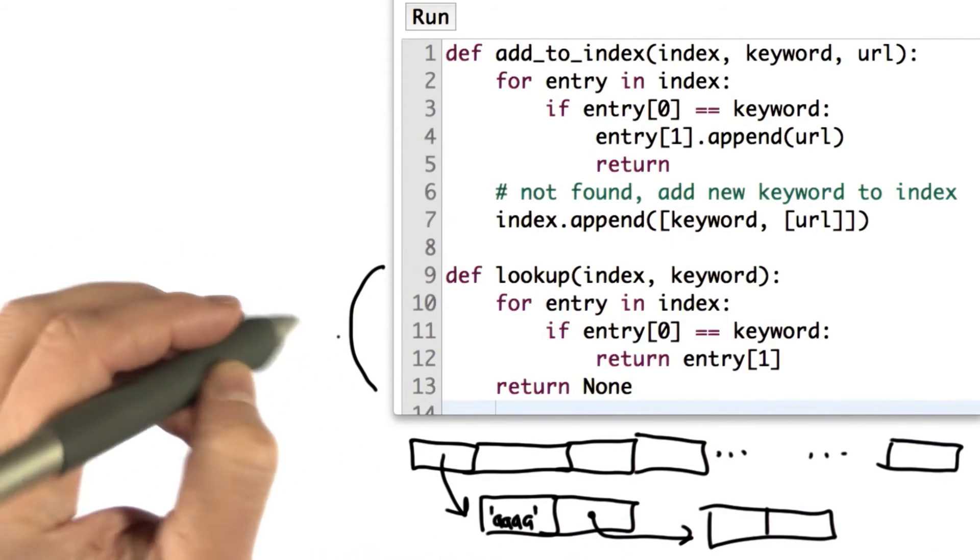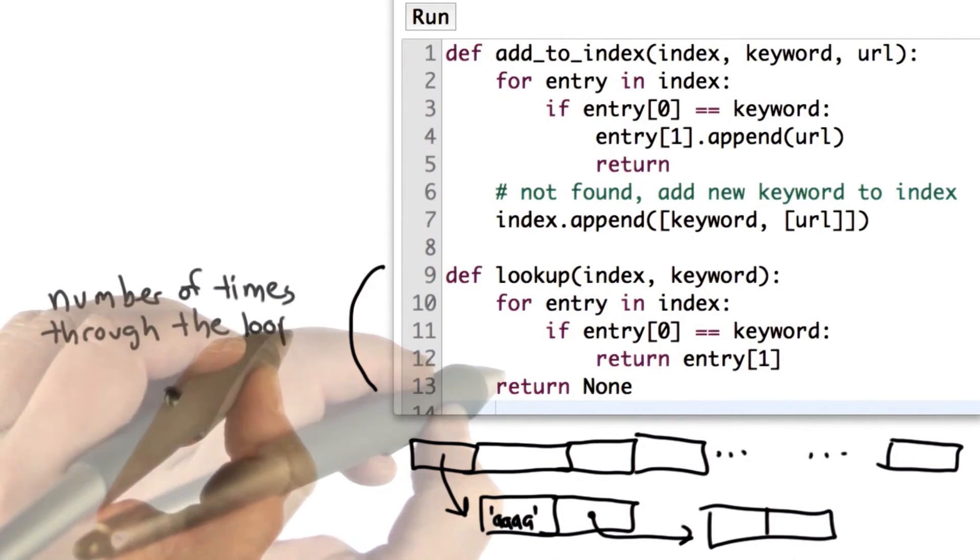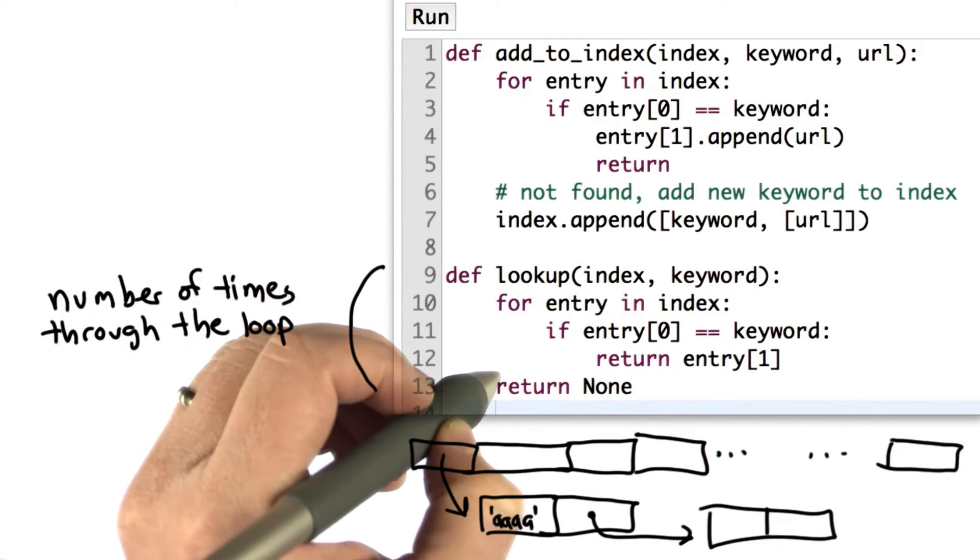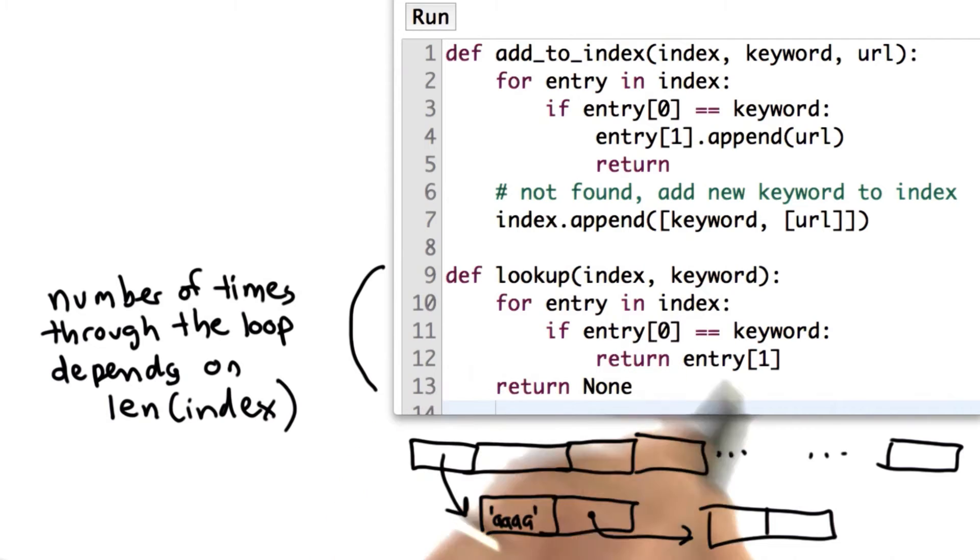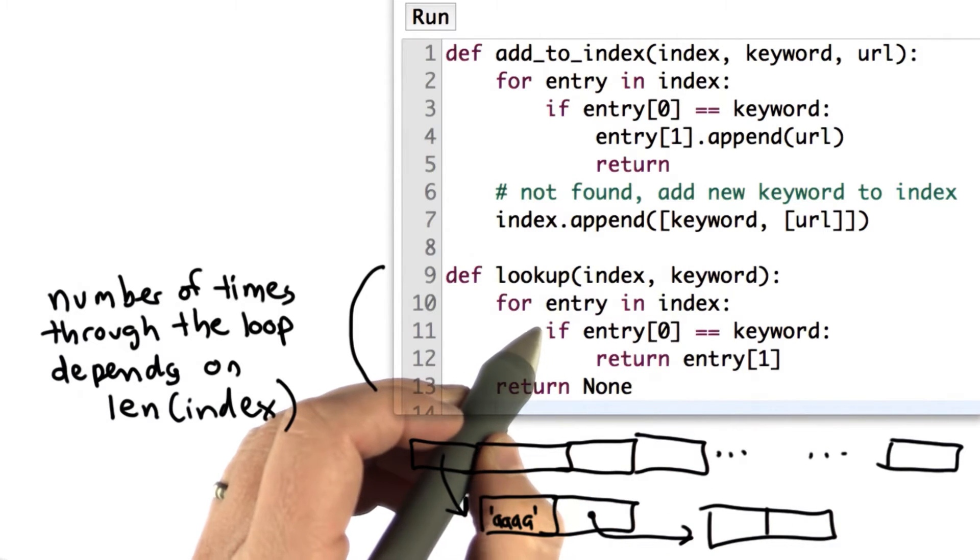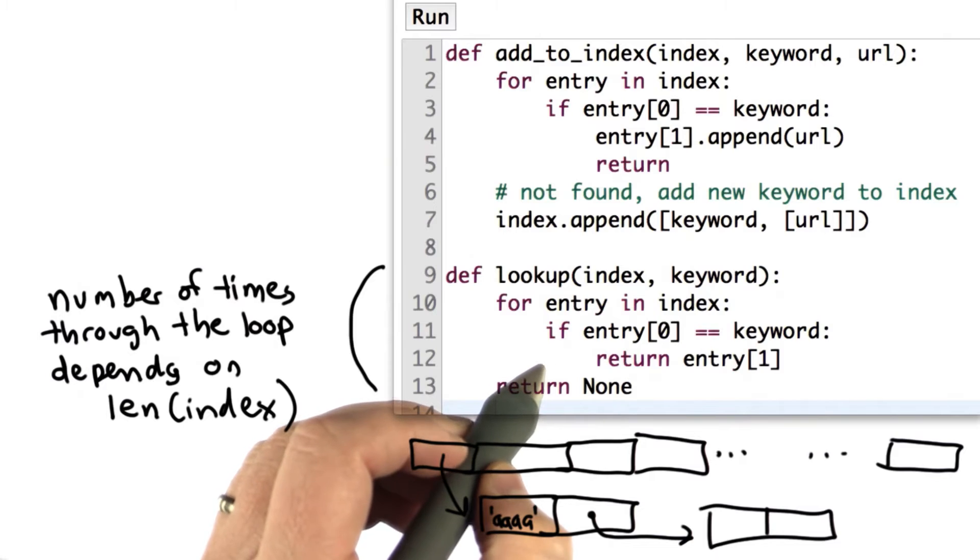And what lookup is doing is going through those entries. The number of times we go through this loop depends on the size of the index. The size of the index is the maximum number of times through that loop. And it also depends on, well, if we find the keyword early, then we're done.